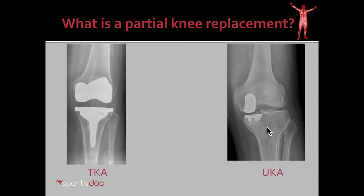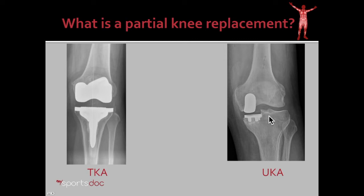Therefore there are two very different solutions for these problems. The patient on the left would have to get a total knee arthroplasty, while the patient on the right could get the less invasive unicompartmental knee arthroplasty, which would preserve all four ligaments of the knee, the lateral menisci, and the patella.